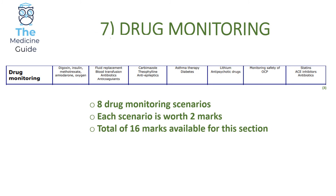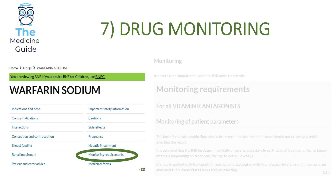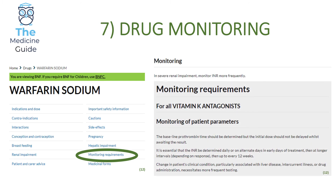The seventh section focuses on drug monitoring, with 16 marks available across eight questions, each worth two marks. For example, if asked how to monitor a patient taking warfarin, type warfarin into the BNF, look at monitoring requirements, and scroll to the bottom — it provides information about monitoring parameters, which for warfarin is the INR.